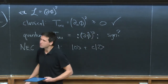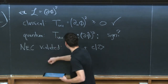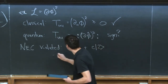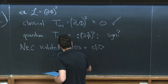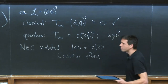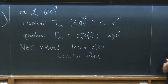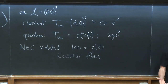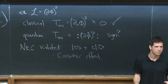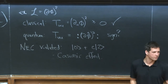Another easy example where the null energy condition is violated is the Casimir effect. In the Casimir effect, you have two conducting plates, and between the two plates there's just a constant negative energy density. So obviously the null energy condition is going to be violated in that region — that's quantum effects coming in, and you can trace it back to these normal ordering terms.